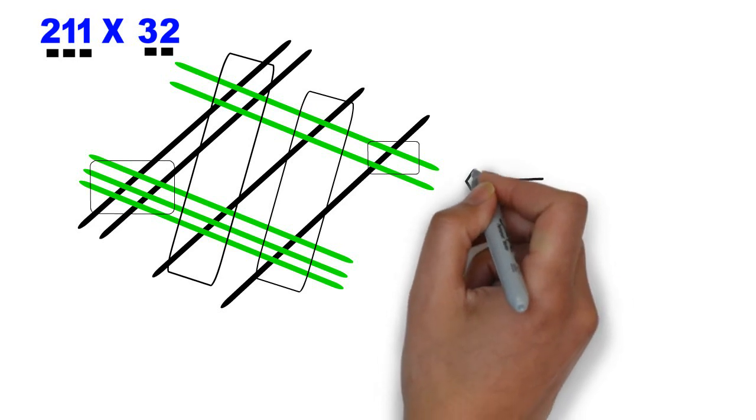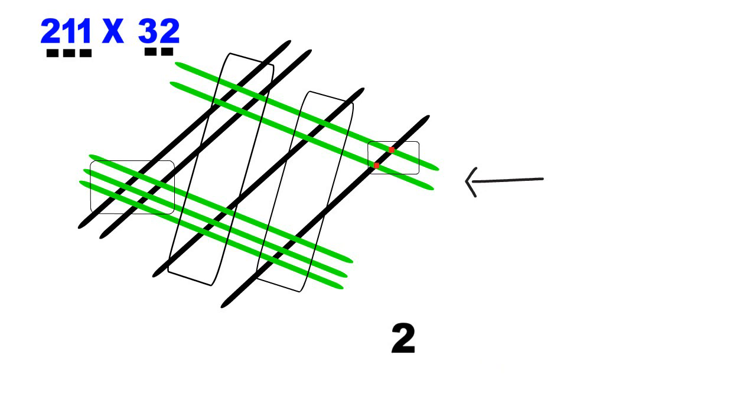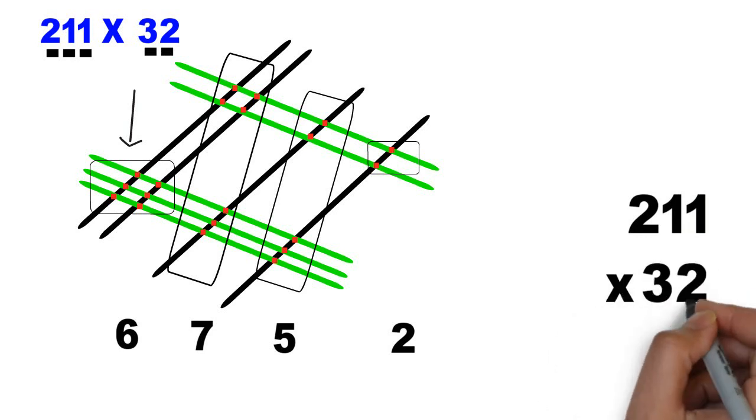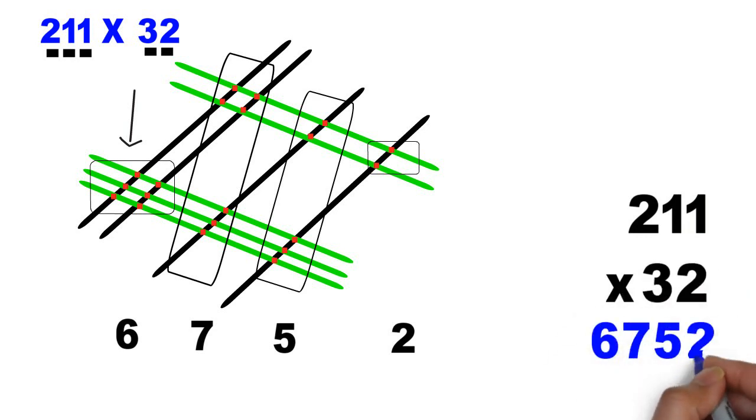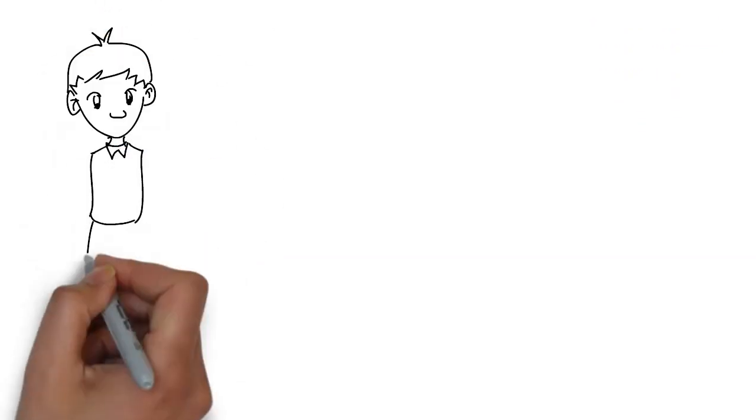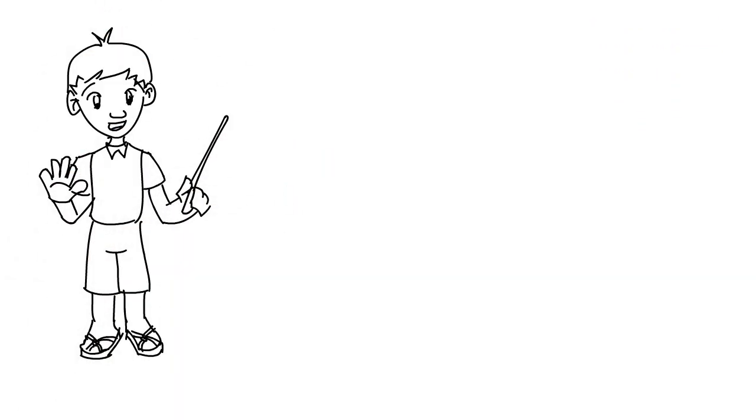Starting with the zone at the extreme right. For 2 intersections, we write a 2. Then, moving on to the second zone. 2 at the top and 3 at the bottom. 5 in all. Third zone has 4 intersections at the top. And 3 at the bottom. Making a total of 7. This is the fourth zone, which has 6 intersections. 1, 2, 3, 4, 5, 6. We write a 6 here and we are done. This is the answer. 211 times 32 gives us 6752. I hope by now you'd be pretty confident of using this technique for multiplication.